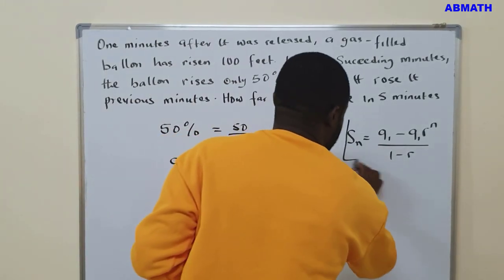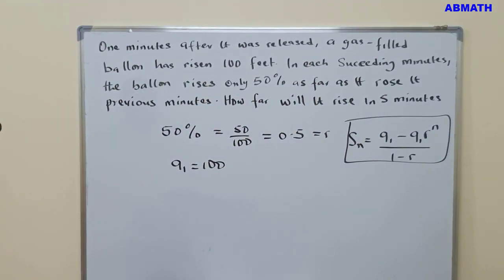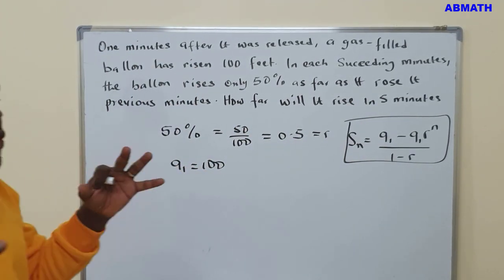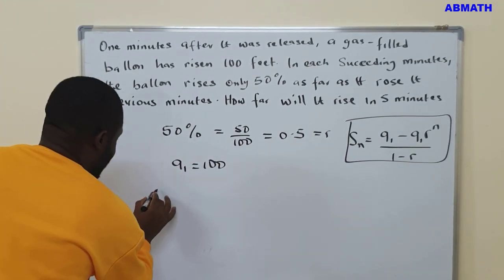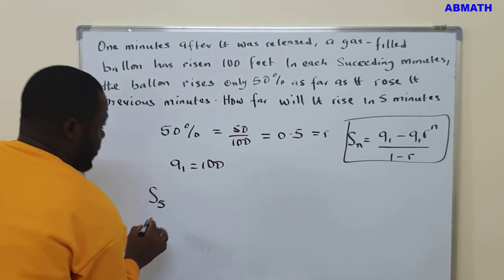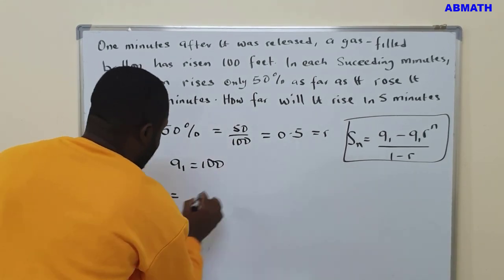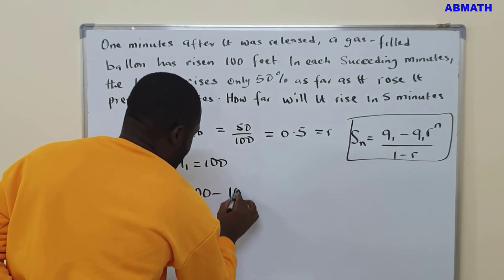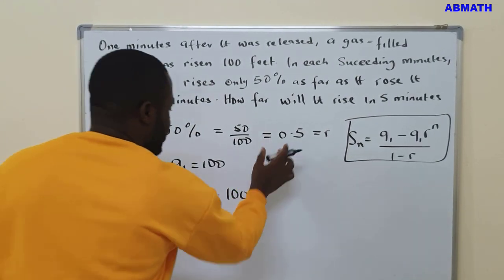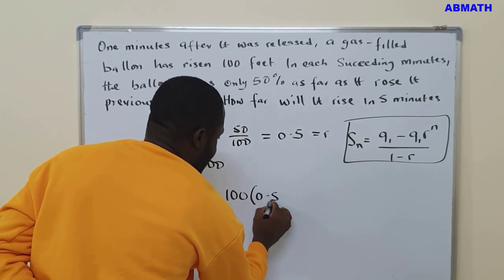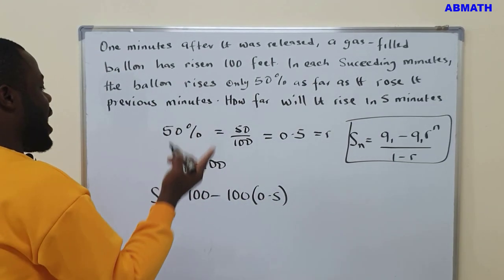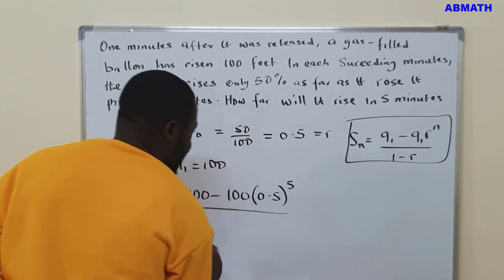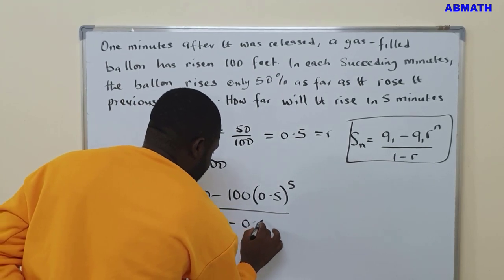So that is the formula we are going to use for this question. We are going to find the sum of five minutes. So you have S5 equals, A1 is 100, so that is our first term, minus 100, then multiply by our common ratio 0.5 to the power of N, which is 5, then divide by 1 minus 0.5.